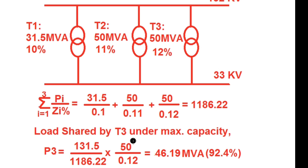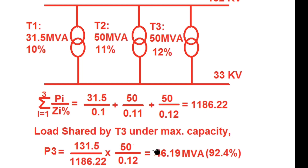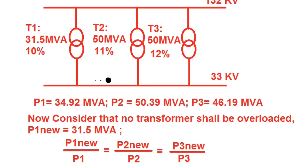The load shared by T3 is P3 = (131.5 / 1186.22) × (50 / 0.12), which comes to 46.19 MVA — running at 92.4% of full load capacity. In summary: T1 is overloaded at 111%, T2 is slightly overloaded, and T3 is underloaded under the maximum capacity condition of the substation.